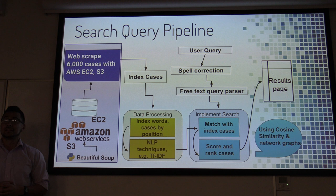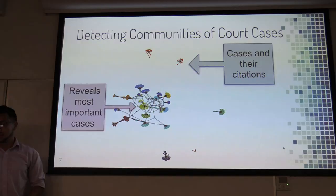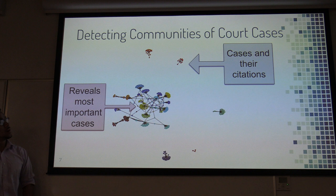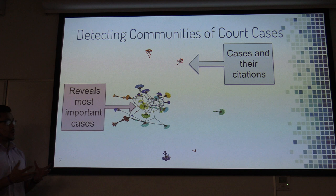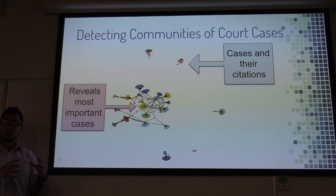One aspect of the scoring function uses network graphs along with cosine similarity. The visualizations show how the network graphs work. What you're seeing is a graph of court cases mapped onto the screen, and around the court cases are citations. Some of these cases share a lot of citations, which can reveal the most important cases. Cases on the outside are less related, so they appear farther away.